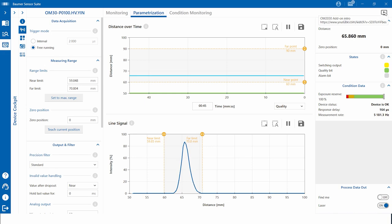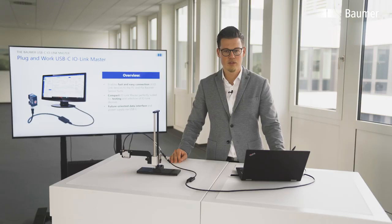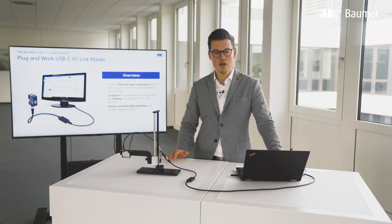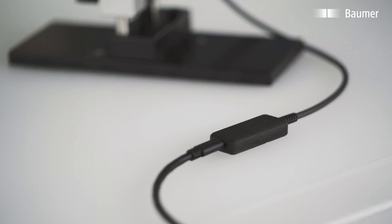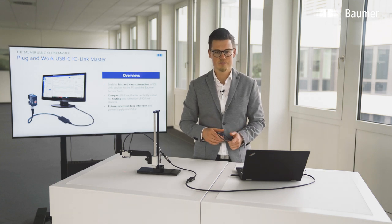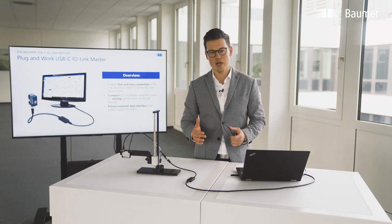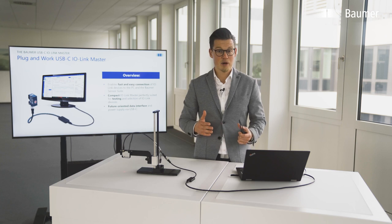As you have seen, the Baumer sensor suite supports a wide range of IO-Link masters, including those from third-party suppliers. Today I'm pleased to present a new, compact and innovative IO-Link master: the Baumer USB-C IO-Link master. It is designed to provide a quick and easy connection to the Baumer sensor suite. The compact design is ideal for development engineers and service personnel in the field. We chose USB-C as the interface to ensure both data and power supply via one cable. Like the Baumer sensor suite, the USB-C IO-Link master is available from now on.